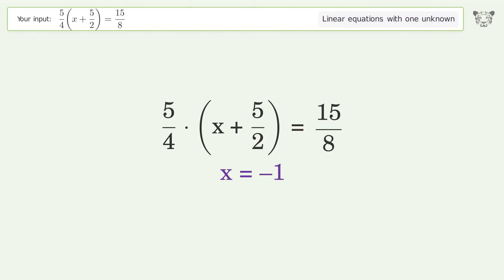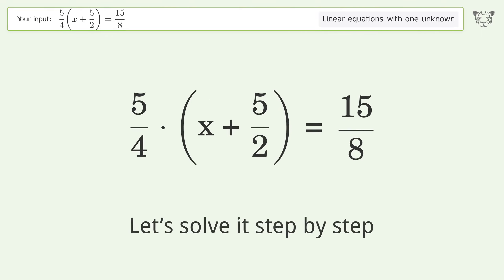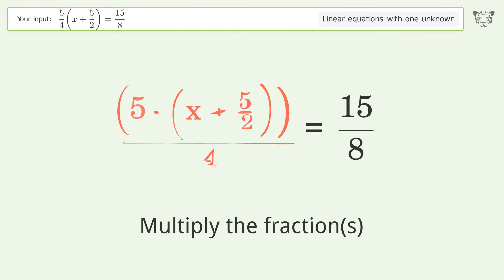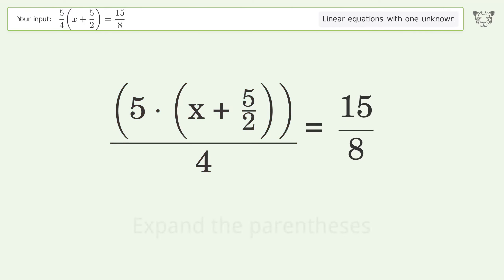You asked Tiger to solve this linear equation with one unknown. The final result is x equals negative one. Let's solve it step by step. Simplify the expression by multiplying the fractions.